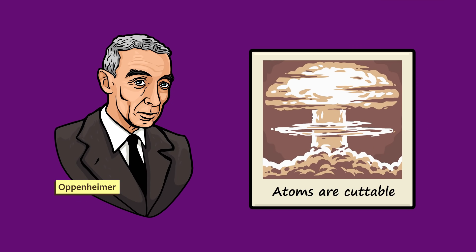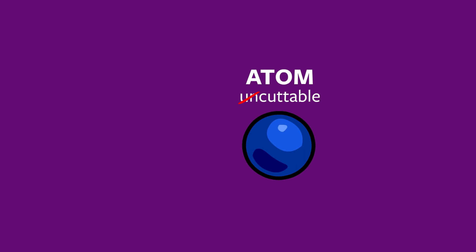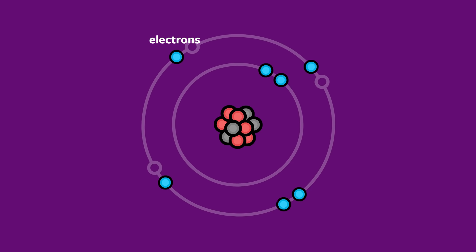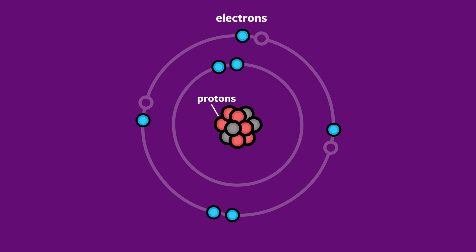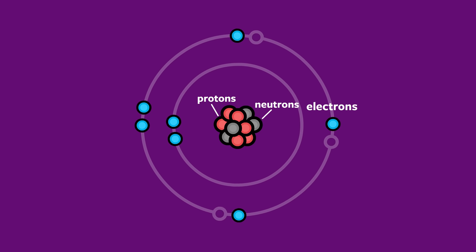Atoms can be split apart. They are made of subatomic particles — most importantly, electrons, protons, and neutrons.